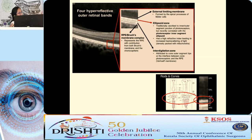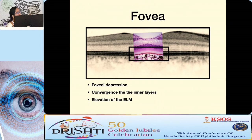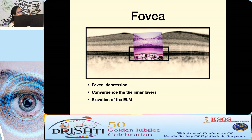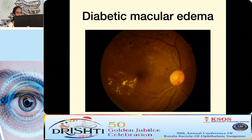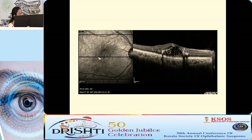Regarding the fovea: in pathological conditions you may not identify it by the depression alone. Other ways to identify the fovea on OCT include the convergence of inner layers at the fovea, and the fact that cones are slightly taller at the fovea — so the external limiting membrane shows anterior bowing just below the fovea. Case scenario: in clinical diabetic maculopathy, the OCT shows hypo-reflective round spaces in the inner plexiform and nuclear layers corresponding to cysts, and hyper-reflective material corresponding to hard exudates with shadowing beneath.